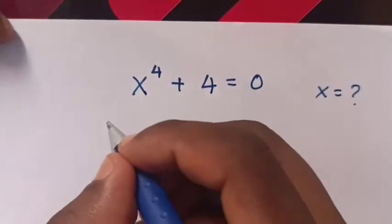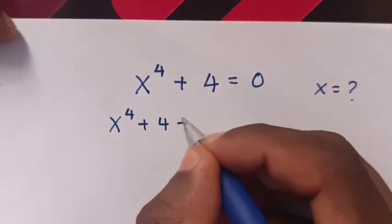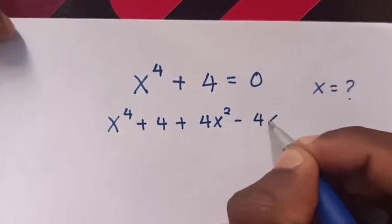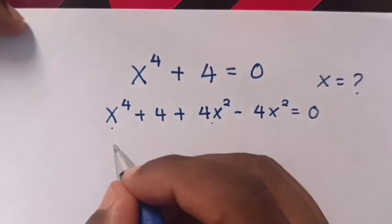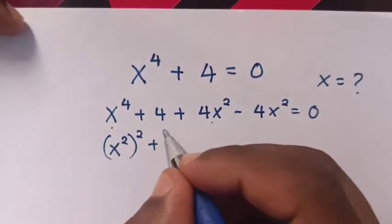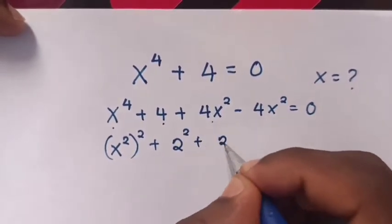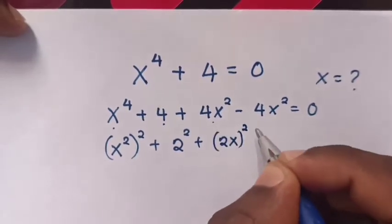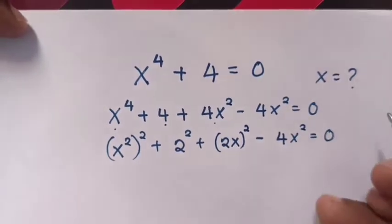So from our equation, x⁴ + 4, we add 4x² and minus 4x², which is equals to 0.